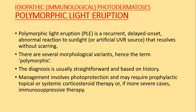The first and commonest of the immunological or idiopathic photodermatoses is polymorphic light eruption. PLE is a recurrent delayed onset abnormal reaction to sunlight or artificial ultraviolet radiation source that resolves without scarring. There are several morphological variants, hence it is termed polymorphic. The diagnosis is usually straightforward and based on history. Management involves photoprotection and may require prophylactic topical or systemic corticosteroid therapy, or in more severe cases, immunosuppressive therapy.